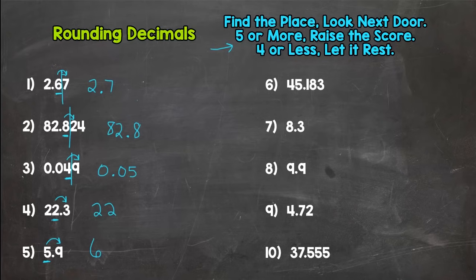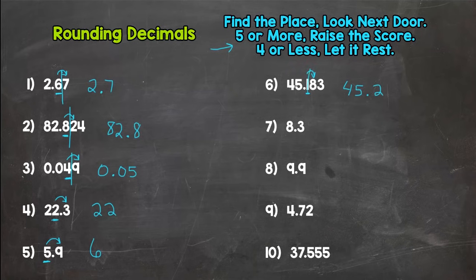For number six, let's round to the tenths place again. We have a one in the tenths place. Look next door and we have an eight, so that says round up. We get forty-five and two tenths. Remember, cut off at whatever decimal place they tell you to round to.